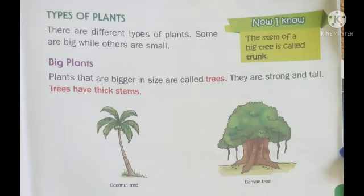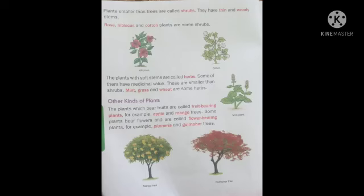Big plants: plants that are bigger in size are called trees. They are strong and tall. Trees have a thick stem. Jo plants bade hote hain un ko hum trees kehte hain — yaani darakht. Jo tree hota hai woh strong hota hai aur lamba hota hai, aur trees ka jo stem hota hai woh bahut thick hota hai.